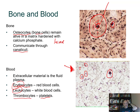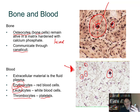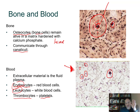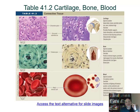Blood transports oxygen, carbon dioxide, nutrients, metabolic waste, and hormones. It also provides a location for the immune system to operate. The immune system works partly through the cardiovascular system via blood and also through the lymphatic system. Cell types in blood include erythrocytes, leukocytes, and platelets (thrombocytes).